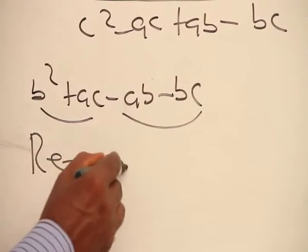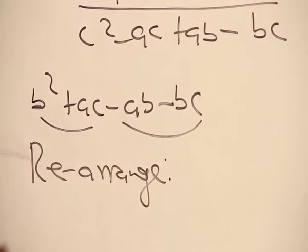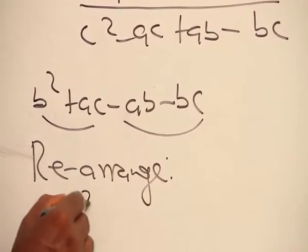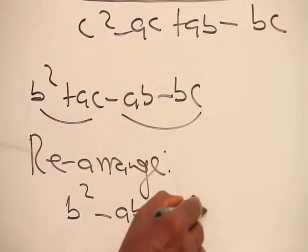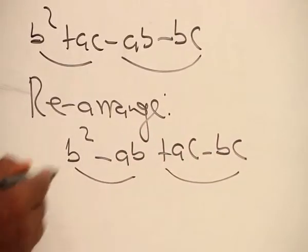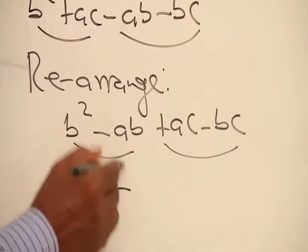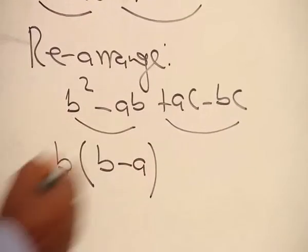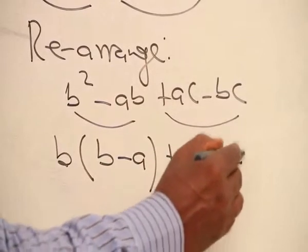We rearrange our terms. When we rearrange, we can have b squared minus ab plus ac minus bc. Now let's pair this again and see what will happen. In this case, we have b common, which means b minus a. Then here we have c common, which means a minus b.